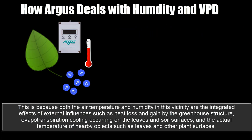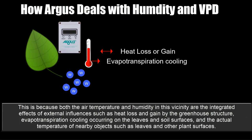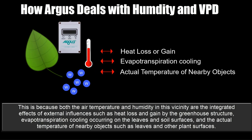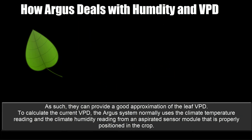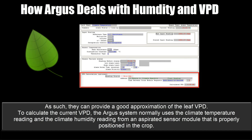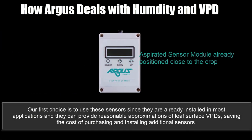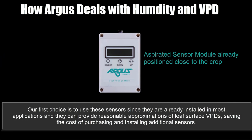This is because both the air temperature and humidity in this vicinity are the integrated effects of external influences such as heat loss and gain by the greenhouse structure, evapotranspiration cooling occurring in the leaves and soil surfaces, and the actual temperature of nearby objects such as leaves and other plant surfaces — as such, they can provide a good approximation of the leaf VPD. To calculate the current VPD, the Argus system normally uses the climate temperature reading and the climate humidity reading from an aspirated sensor module that is properly positioned in the crop. These sensors are already installed in most applications and can provide reasonable approximations of leaf surface VPDs, saving the cost of purchasing and installing additional sensors.